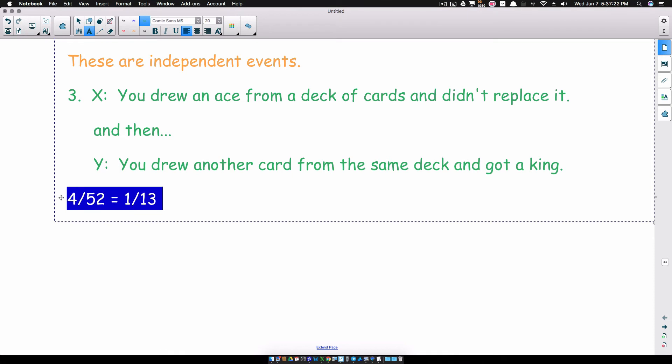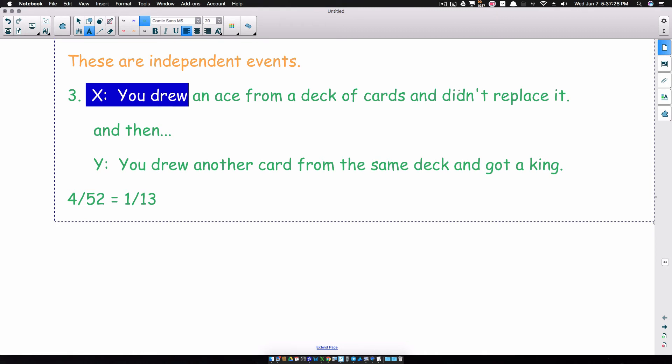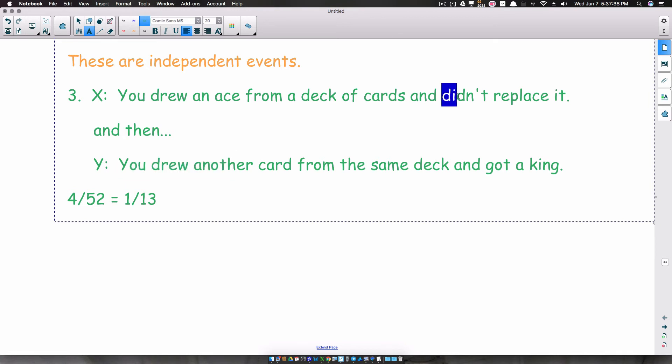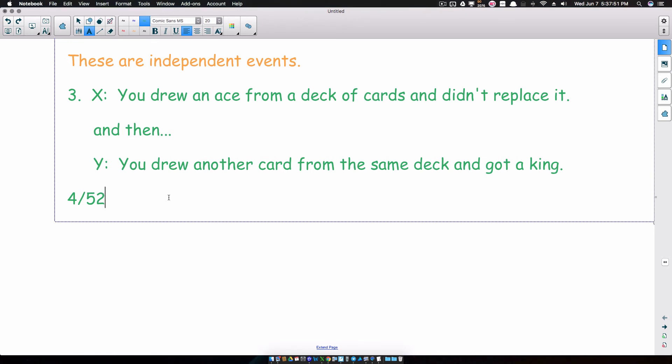Will this probability change if this occurs? You drew an ace from a deck of cards and you did not replace it. So, we drew an ace. We didn't draw a king. So, the 4 is going to stay the same down here. But, since we did not replace that ace, that takes our 52 cards down to 51. So, notice what I had a moment ago when I had 4 out of 52. That was when we had a full deck of cards. But, this is not going to be the case for event Y now because we did not replace that ace and then we draw another card. We still have 4 kings but we now only have 51 cards.